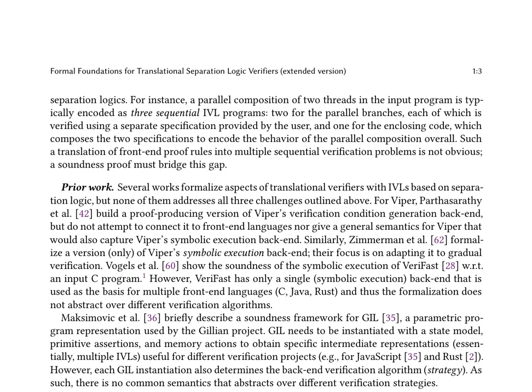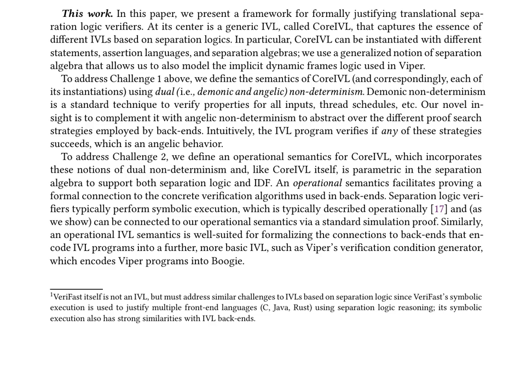The paper addresses the challenge of defining the semantics of core IVL using dual non-determinism, which includes both demonic and angelic non-determinism. This approach abstracts over different proof search strategies employed by back-ends, ensuring that the IVL program verifies if any of these strategies succeed. An operational semantics for core IVL is defined, incorporating dual non-determinism and being parametric in the separation algebra, facilitating a formal connection to concrete verification algorithms such as symbolic execution and encoding IVL programs into boogie.